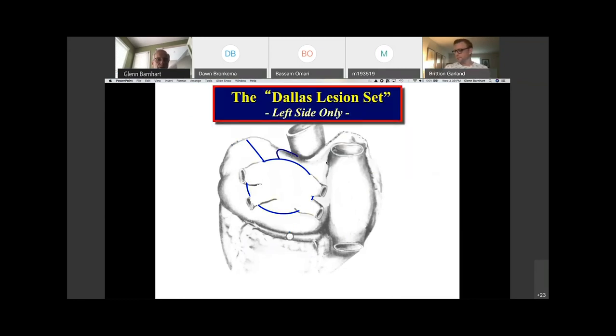The Dallas lesion set, left-side only. This was a way of trying to prevent postoperative mitral flutter that we're going to talk about in a few minutes, but it really has nothing to do with the maze concept.